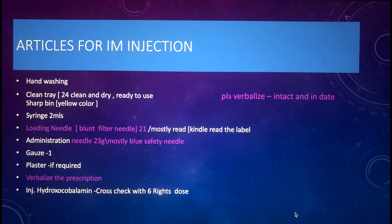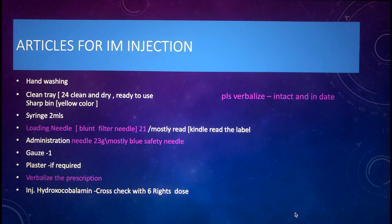Take a clean tray and verbalize: 'The tray has been washed with soap and water and is clean for the last 24 hours and ready to use.' For any injection involving a needle, you must take a sharps bin — the yellow bin. Take it as soon as you take the tray so you won't forget it. Then take a 2ml syringe and a loading filter needle, most commonly 21 gauge (usually red), for drawing from the ampoule.